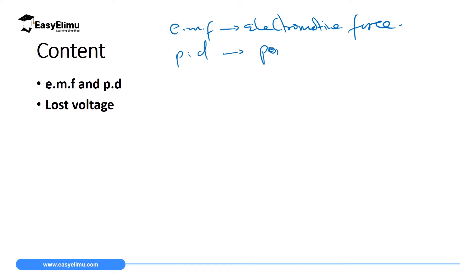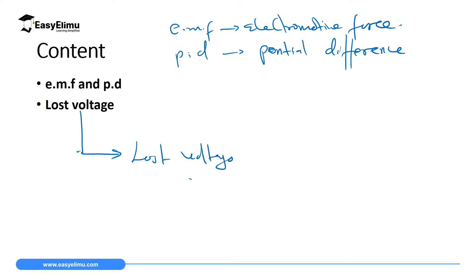I expect you to be able to differentiate between the two, and then finally use the idea of EMF and potential difference to calculate the lost voltage. The lost voltage — the voltage which is lost — is the difference between the electromotive force and the potential difference, and we are going to calculate it as EMF minus potential difference. We are going to see this and do some numerical examples.